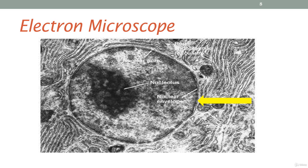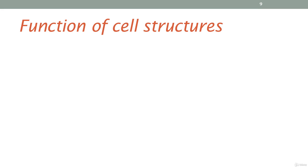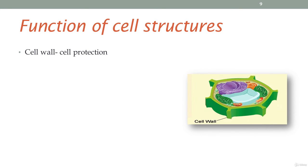For the next few slides, we'll be looking at the function of selected organelles from both plant and animal cells. Cell wall: it is found in plant cells mainly, and sometimes also in bacterial cells. The main function of a cell wall is basically to protect the cell. For example, in plant cells, if too much water enters into the cell, the cell wall will protect the cell from bursting.